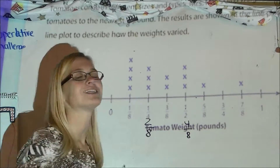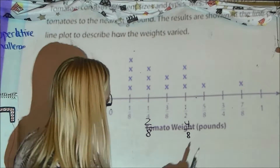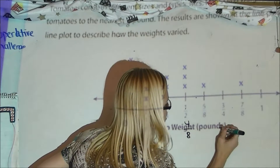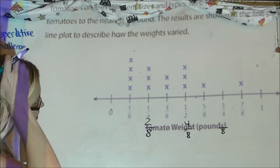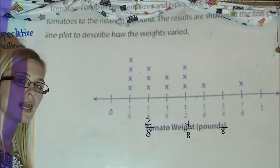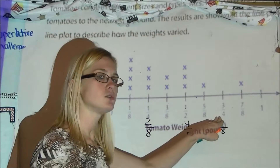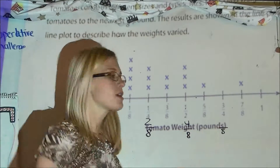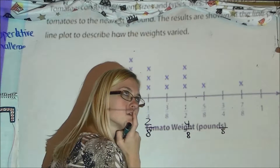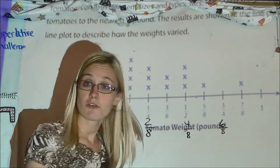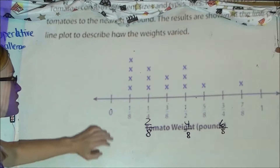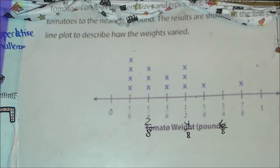For 3/4, it's not in 8ths yet. 4 times 2 is 8, and what I do to the bottom I also do to the top: 3 times 2 is 6. So 3/4 is equivalent to 6/8. Now I've got those like denominators that are going to actually help me answer the questions.